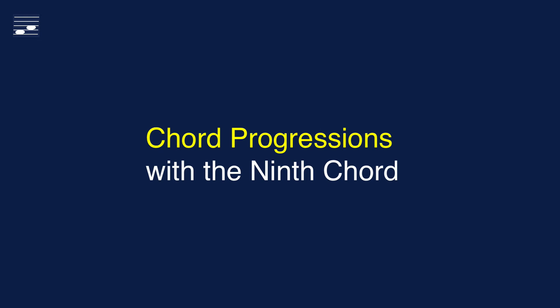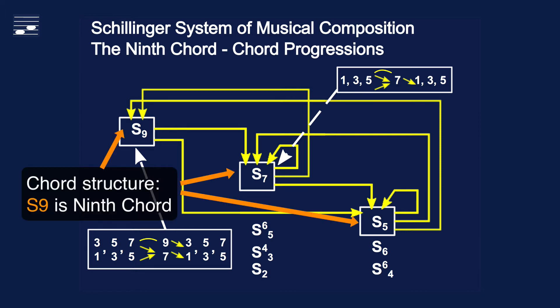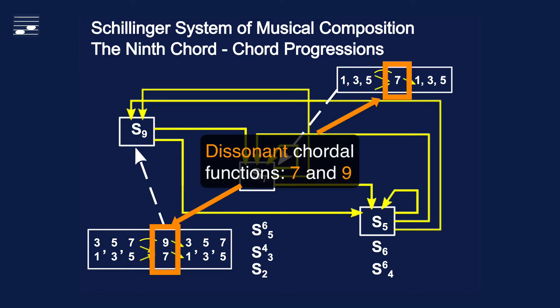This concludes the summary of part 1 and we will now look at diatonic chord progressions with the 9th chord. This diagram is an overview of the options for chord progressions in the Schillinger diatonic harmony system. We will use triad S5 and two types of dissonant chord structures: the 7th chord S7 with a single dissonant function, and the S9 with the dual dissonant functions 7 and 9.